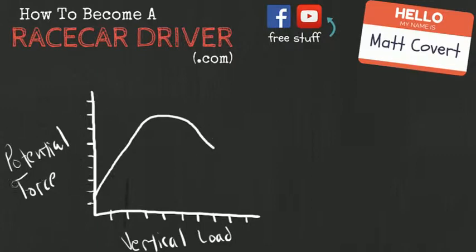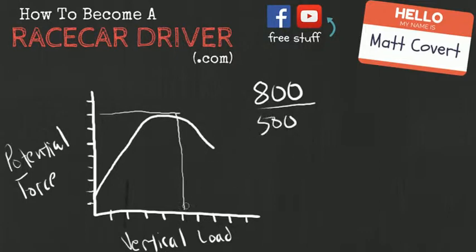So let's talk about the relationship between potential force and vertical load. A tire's potential, let's just say this is a theoretical tire. Let's say this tire is capable of producing 800 units of potential force when there are 500 pounds loaded on that tire.